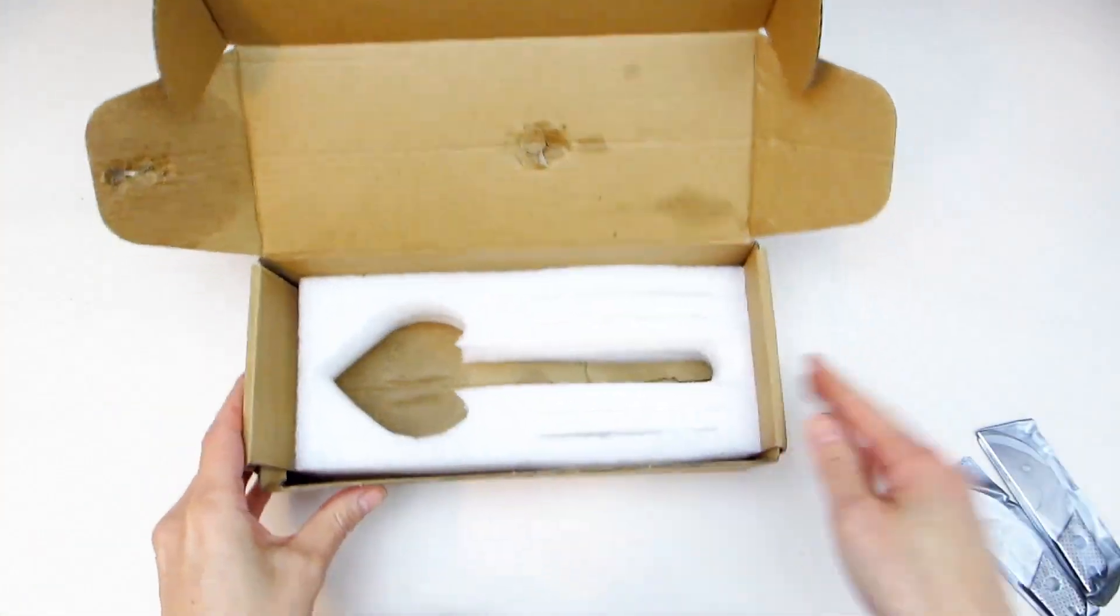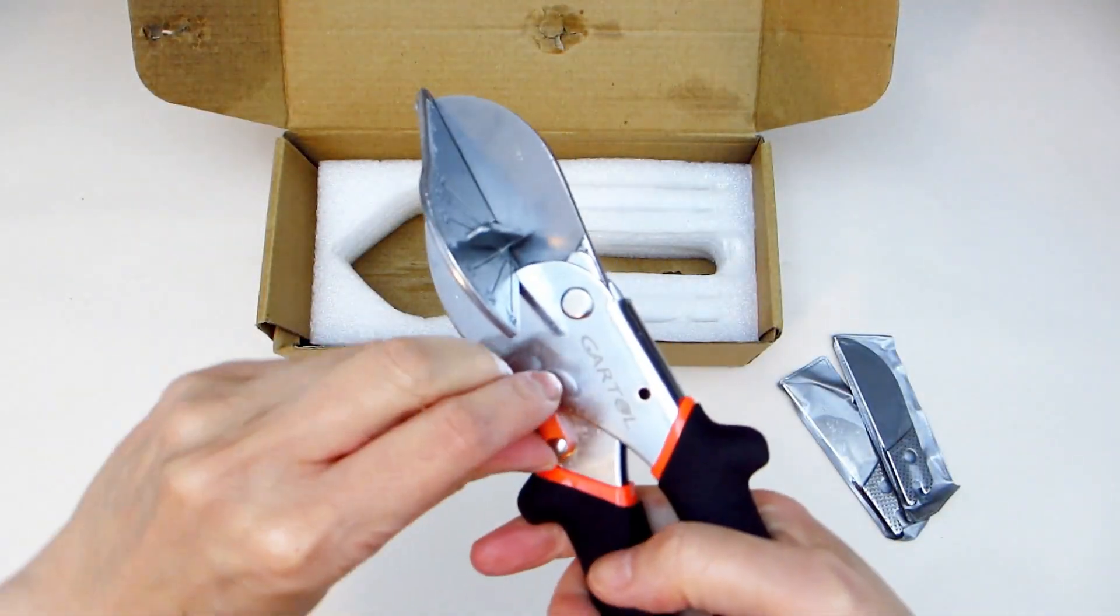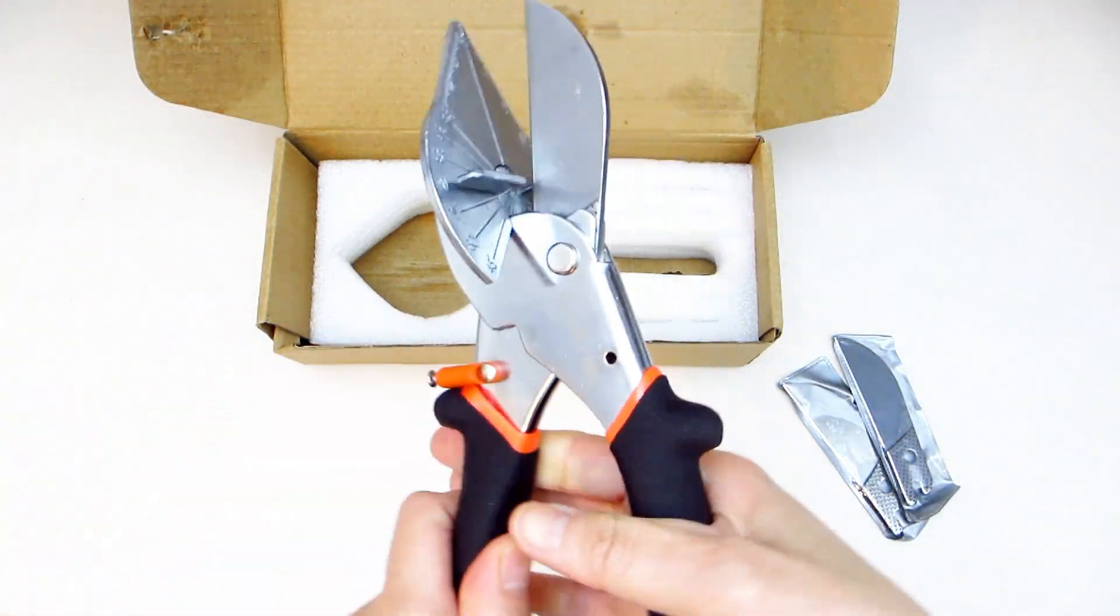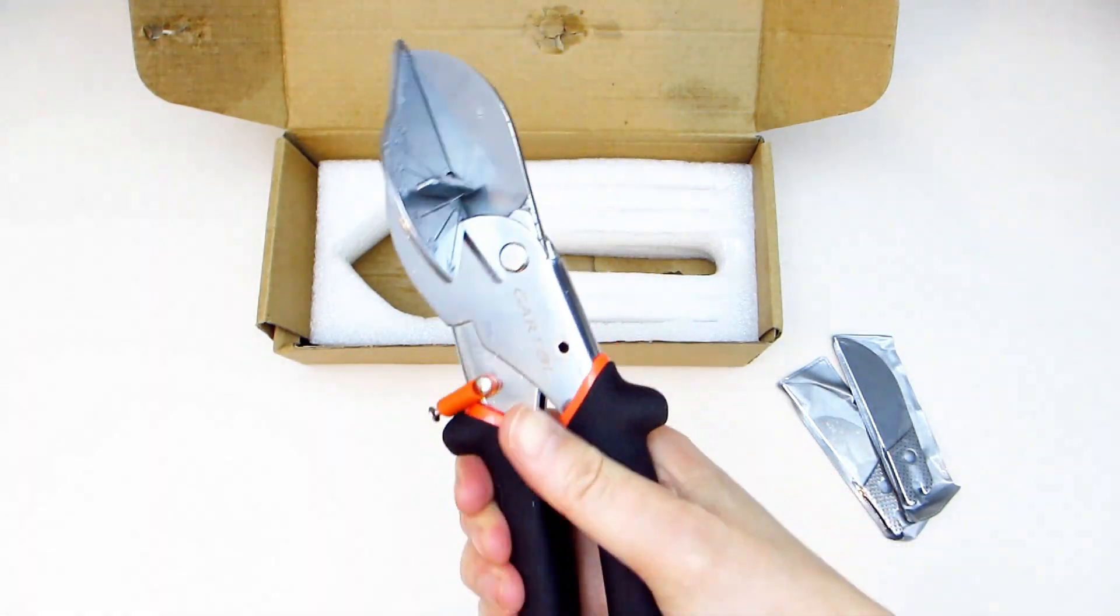To unlock the shears for use, slide the orange clasp downwards, which will then allow you to control the opening and closing of the shears while clasping the handles.